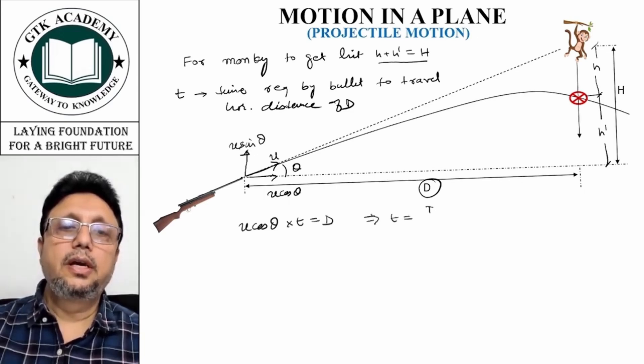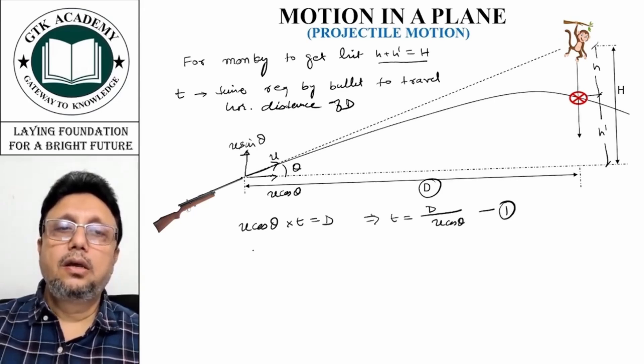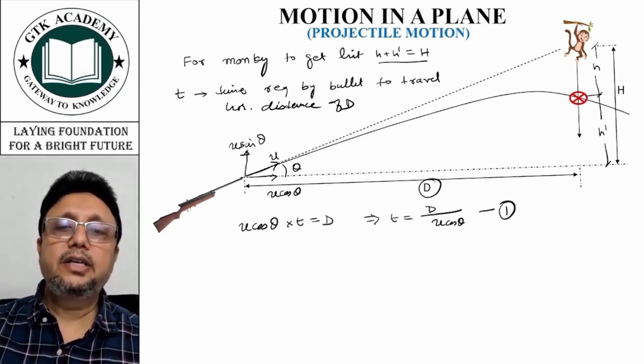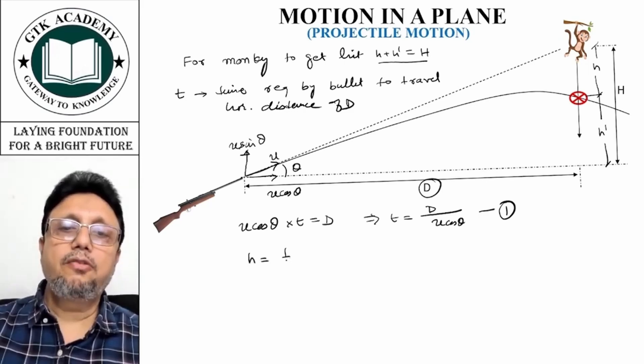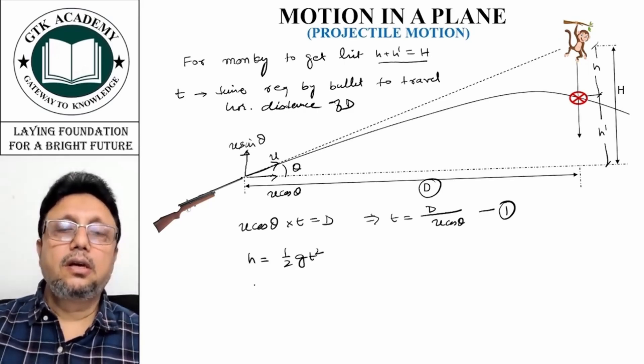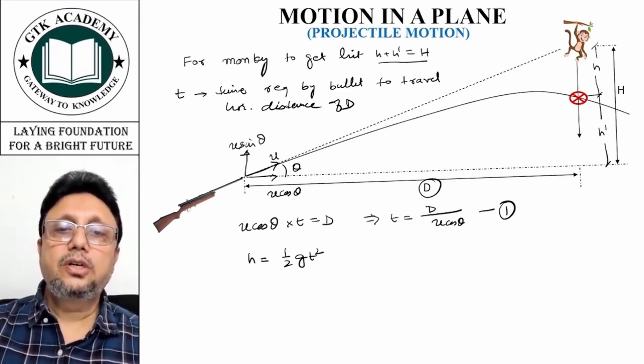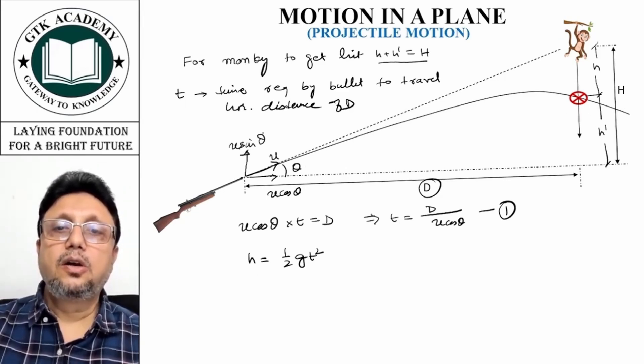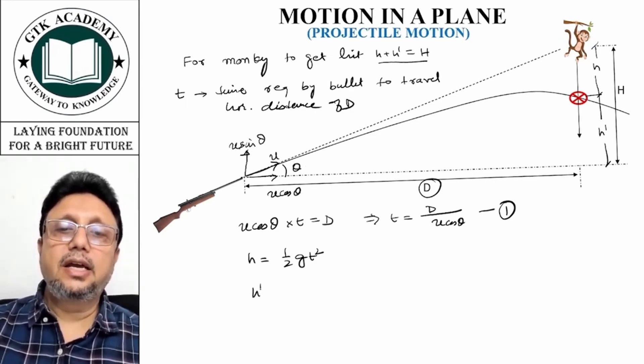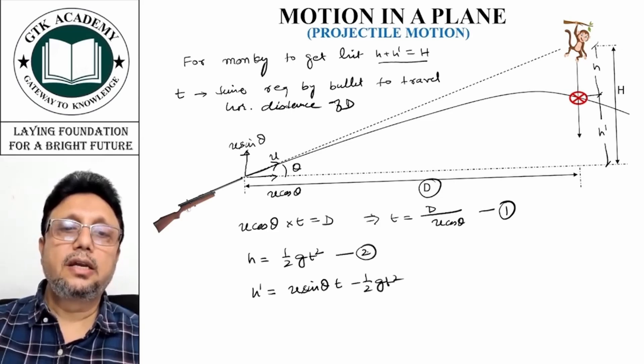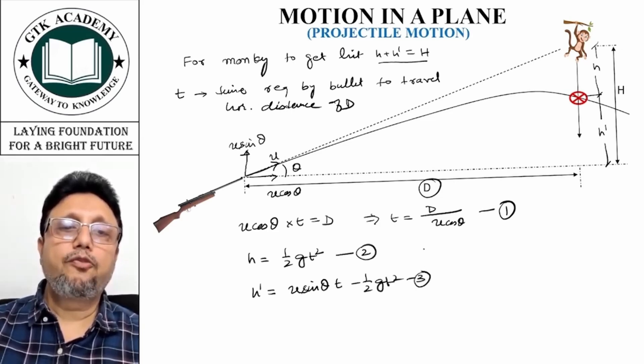Now in the same time, the monkey is going to fall by height h. For the monkey, h is equal to half g t squared. And h dash is equal to u sine theta into t minus half g t squared. If you add them, half g t squared gets cancelled.